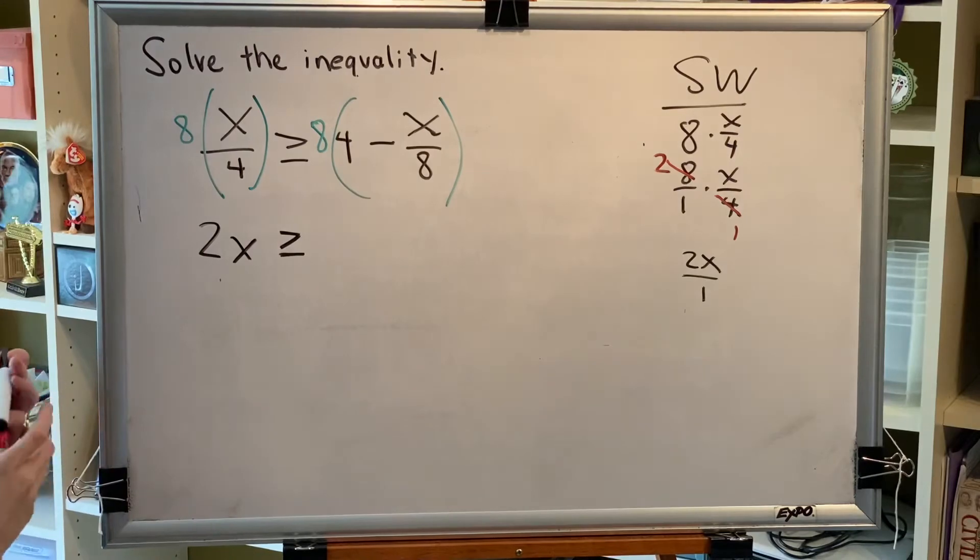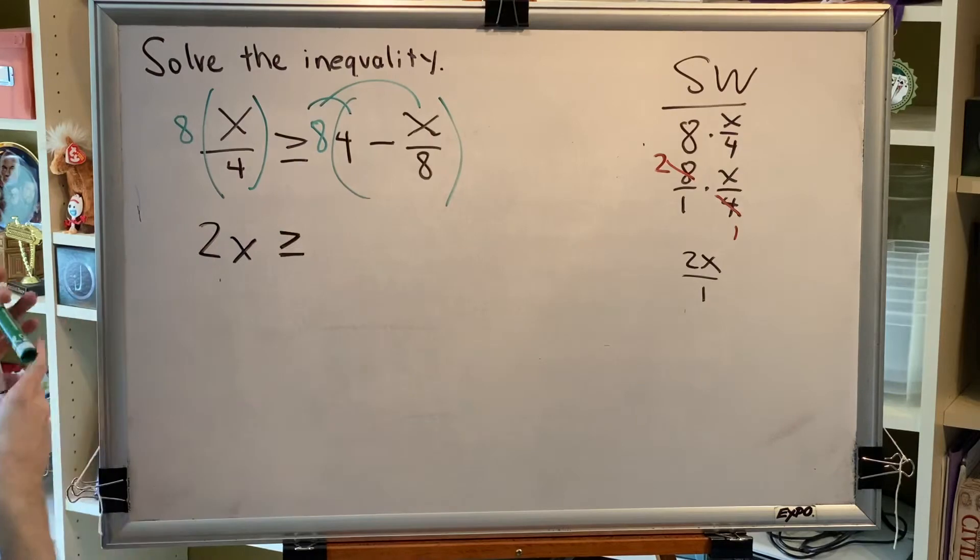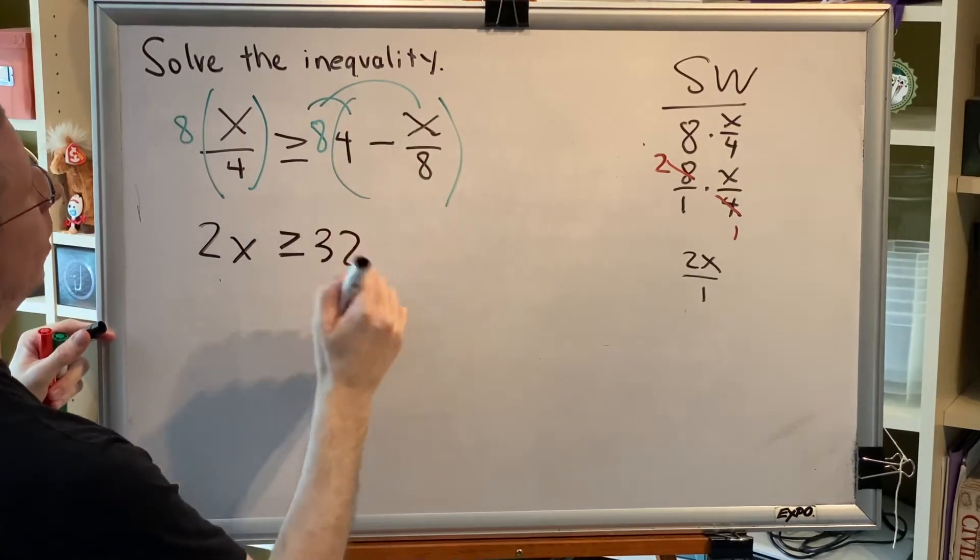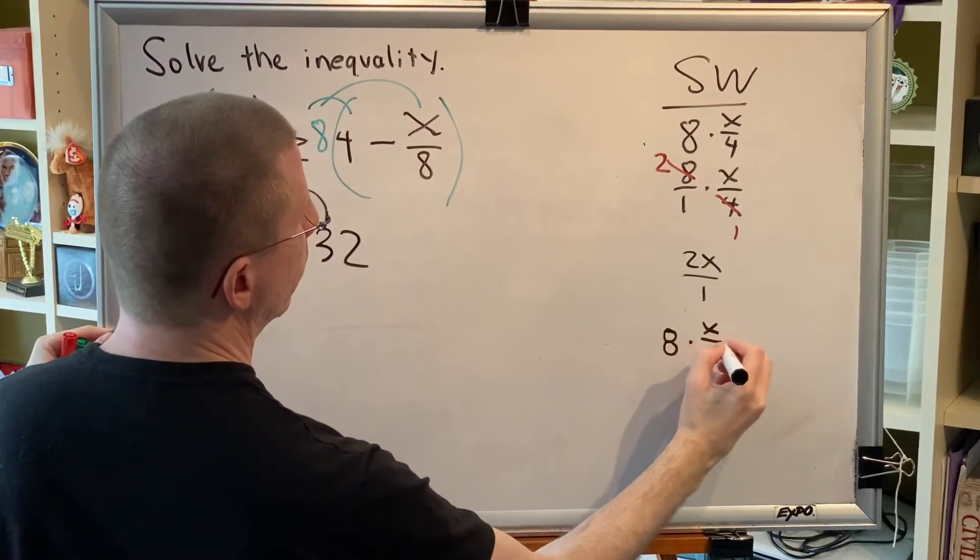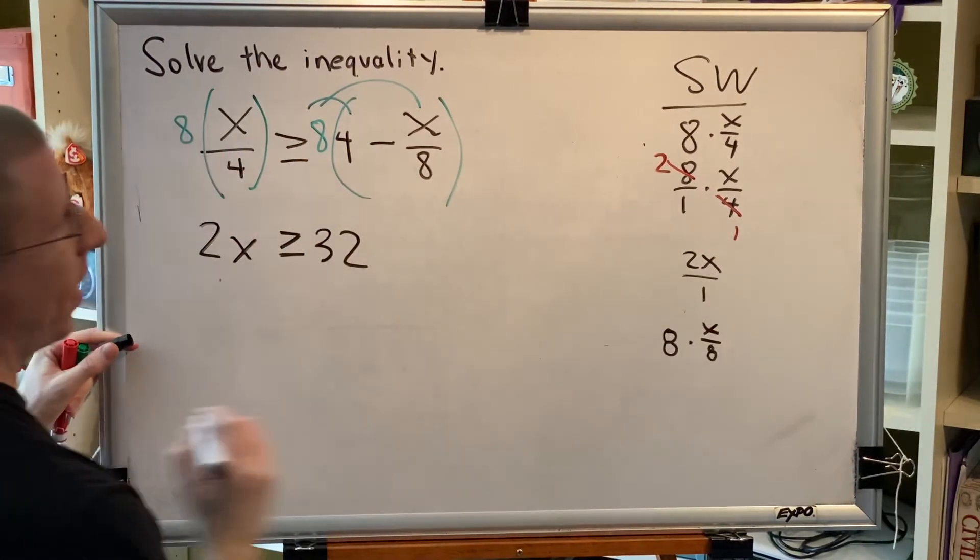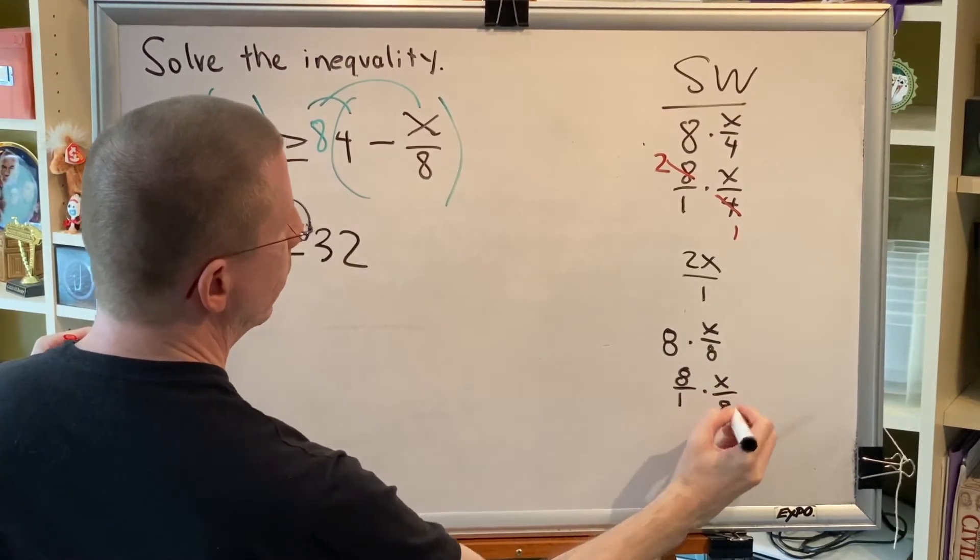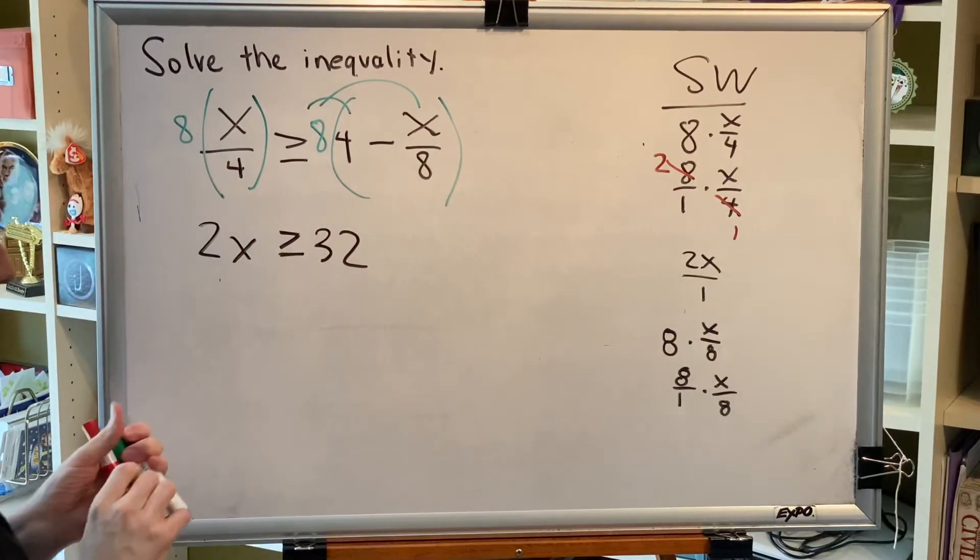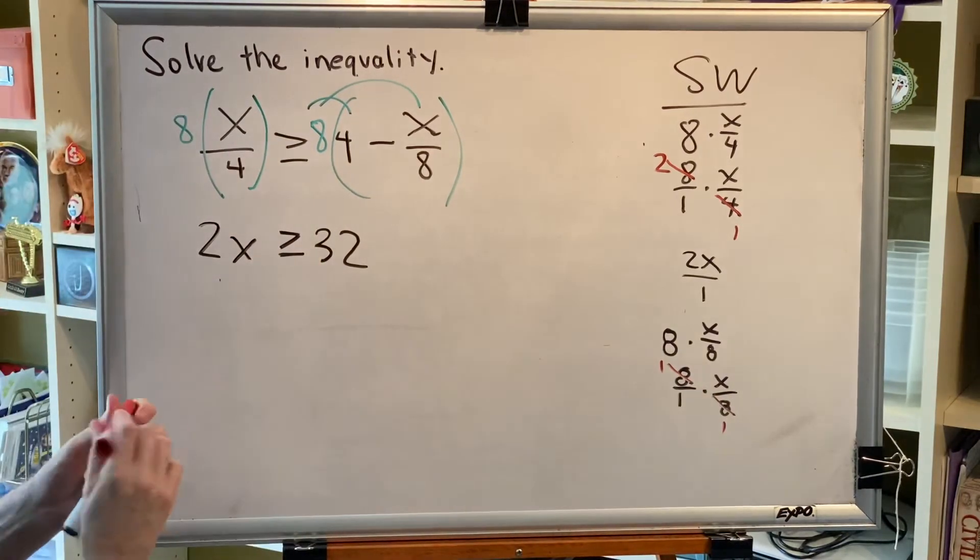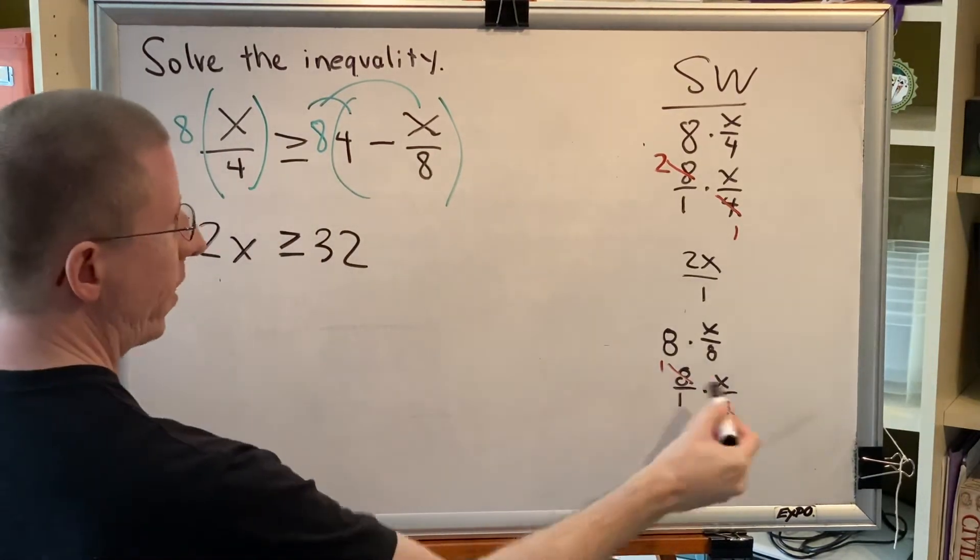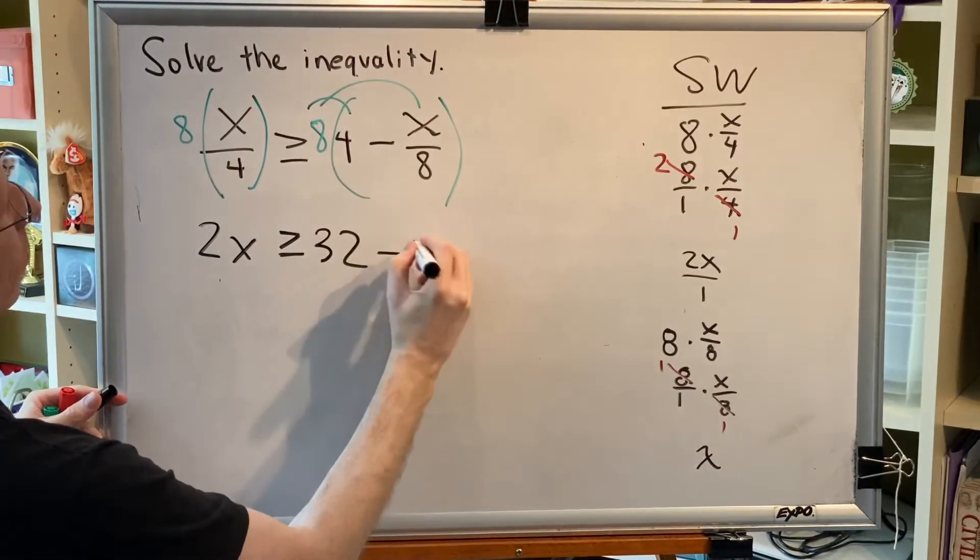On the right side, we distribute. 8 times 4 is 32. And 8 times x eighths. Let's again go to our side workspace. 8 times x eighths could be written as 8 over 1 times x over 8. The eighths cancel. They both turn into the number 1. So then, what do I have? 1x over 1, or simply x. So subtract x.